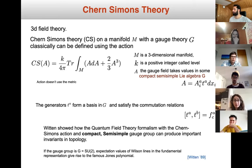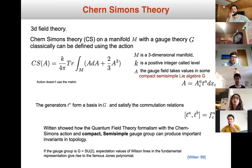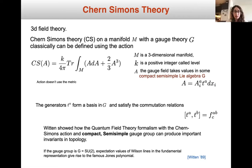A very nice observation by Witten in 1989 showed how Chern-Simons theory with a compact and semi-simple gauge group can produce important invariants in topology. This observation was one of the starting points for physicists and mathematicians to talk to each other, as quantum field theory became connected to invariants of three-manifolds. In particular, Witten saw that for gauge group SU(2), there is a relation with the Jones polynomial in topology.